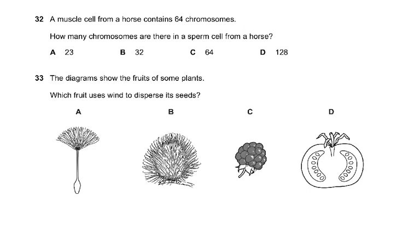Question 32: a muscle cell from a horse contains 64 chromosomes — that is the diploid number. How many chromosomes would be in a sperm cell from a horse? A sperm is a gamete, so it has half — 32 chromosomes. The answer is B.